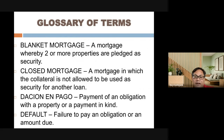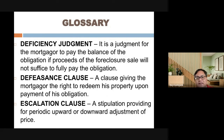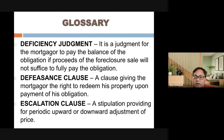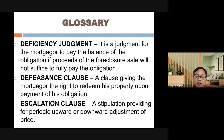Deficiency judgment: a judgment requiring the mortgagor to pay the balance of the obligation when the proceeds of the foreclosure sale are not sufficient to fully pay it. For example, if the loan grew to 1.2 million pesos but the property was sold at auction for only 800,000 pesos, there is a 400,000 peso deficiency — you can still be required to pay that balance despite the property being foreclosed.